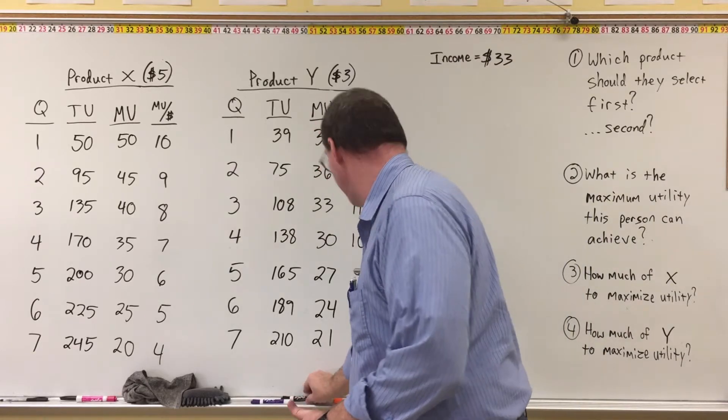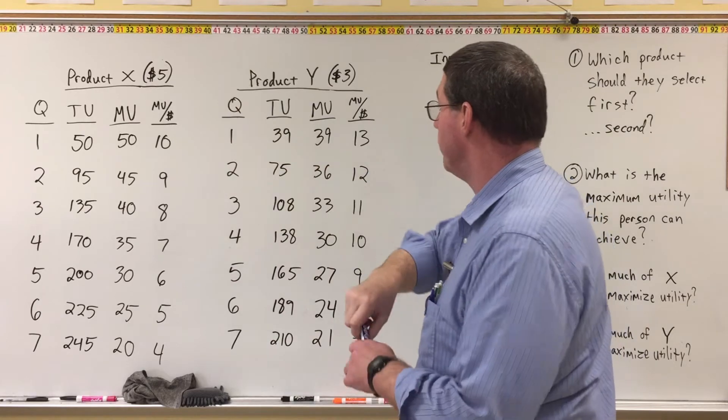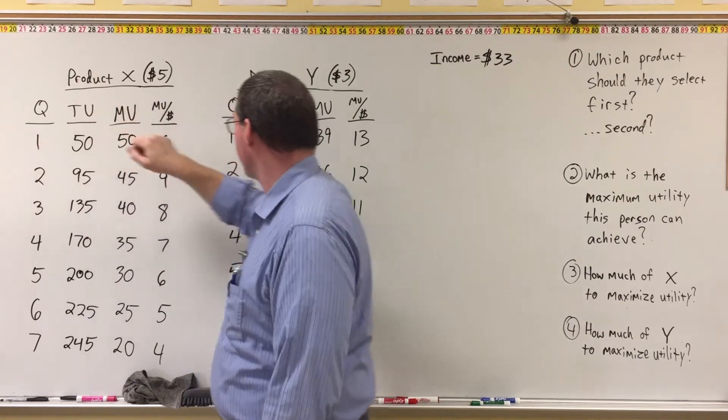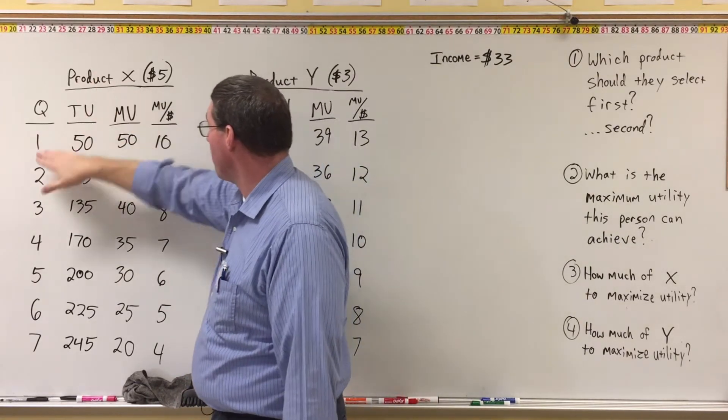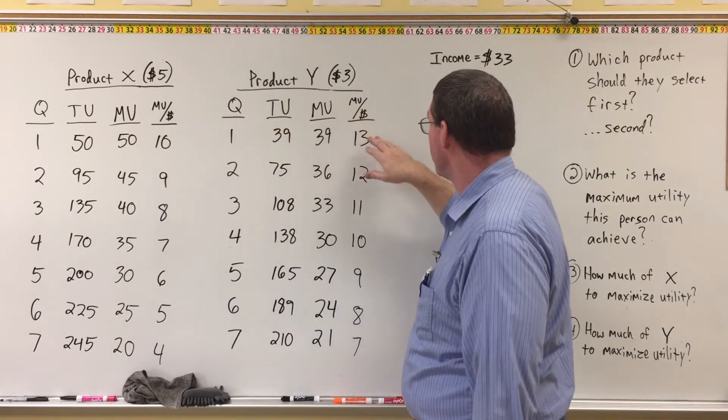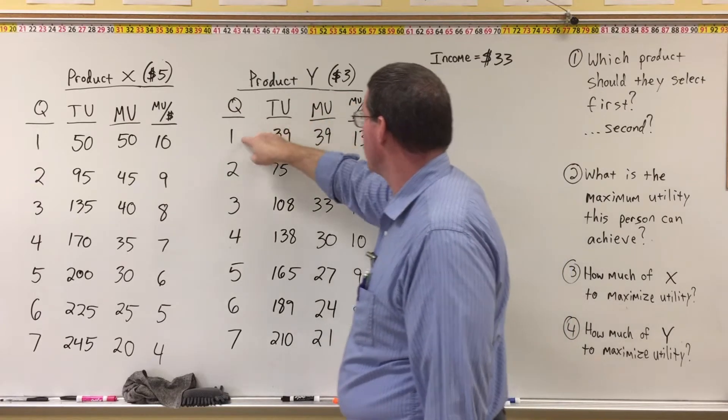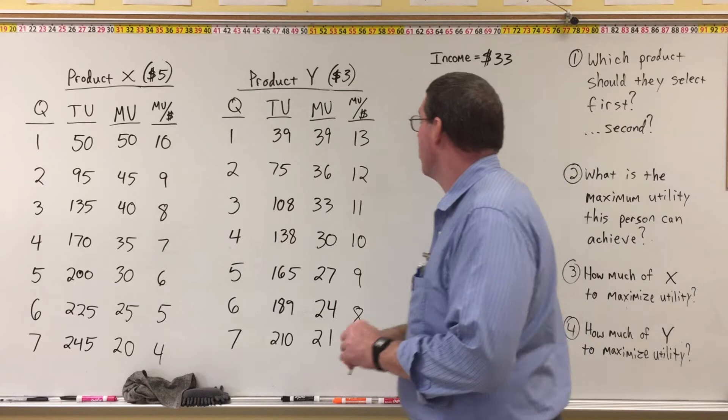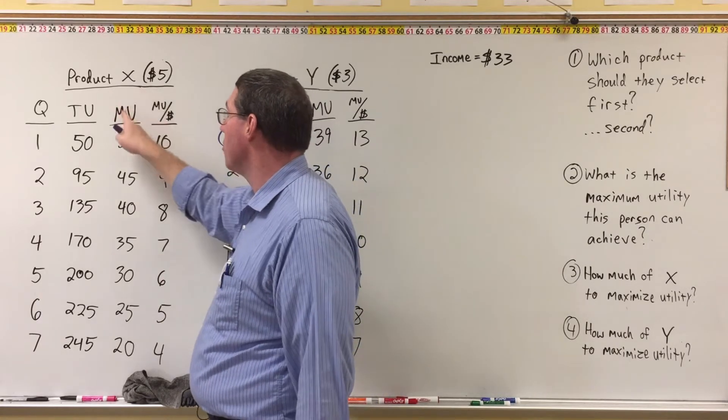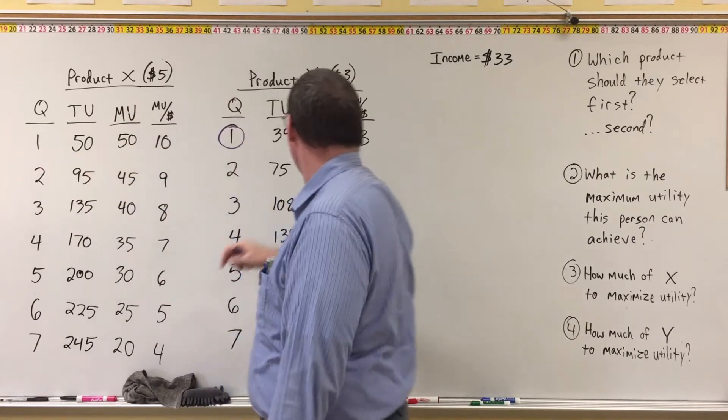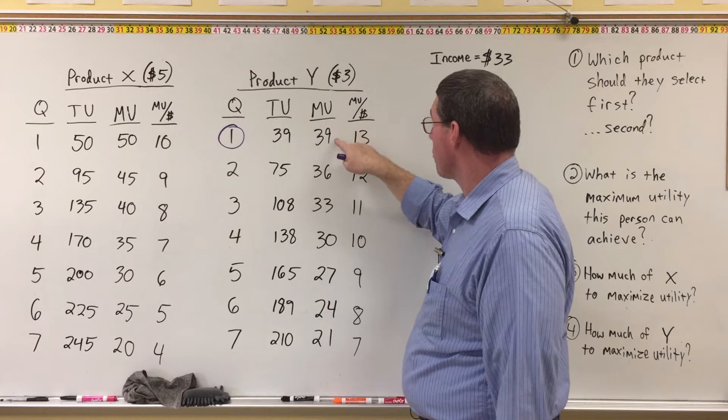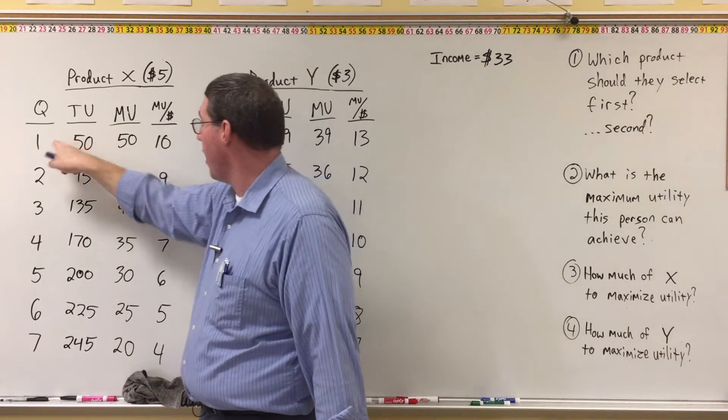Okay, so let's go ahead and start with item one. We're going to compare the first unit of product X to the first unit of product Y, and the first unit of product X has a marginal utility per price of 10, and the first unit of product Y has a marginal utility per price of 13. So we're going to select the first unit of product Y because it has a higher marginal utility per dollar. Now, I do want to point out that product X actually has a higher marginal utility for the first unit than the first unit of product Y. The marginal utility of the first product Y is 39, where the first one for X is 50.